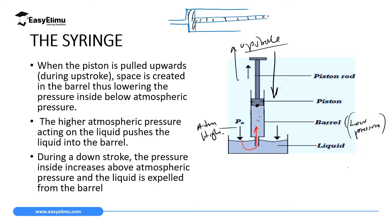So that is how a syringe works. You make sure it is empty at the beginning, put it inside a liquid, and pull up — upstroke. During upstroke you create low pressure inside; atmospheric pressure from outside is high and causes the liquid to move in. When you want to eject the liquid, you do a downstroke, creating high pressure inside, which makes the liquid move from high pressure inside to low pressure outside.